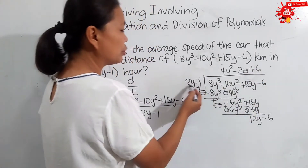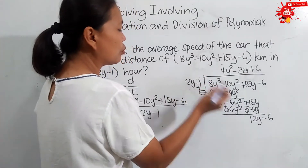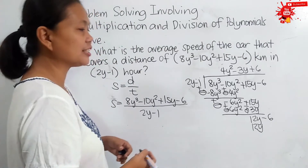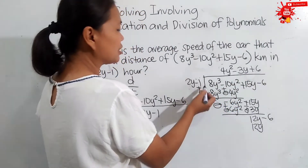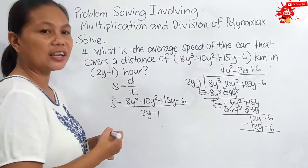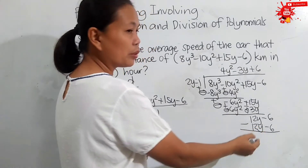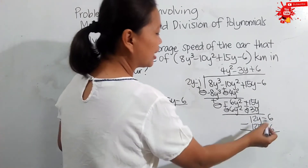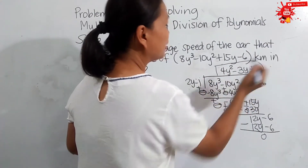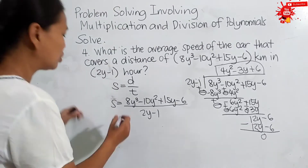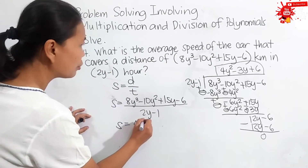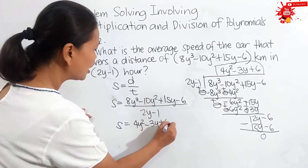We multiply positive 6 by the divisor: 6 times 2y is 12y, aligned with 12y. Positive 6 times negative 1 is negative 6. We proceed to subtraction: 12y minus 12y is 0, and negative 6 minus negative 6 is 0. Therefore, the quotient is 4y squared minus 3y plus 6. So, the average speed is equal to 4y squared minus 3y plus 6.